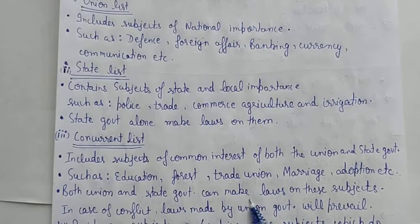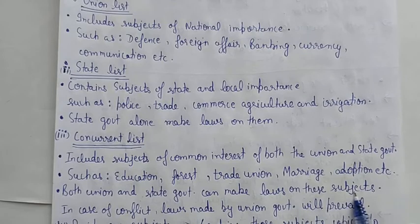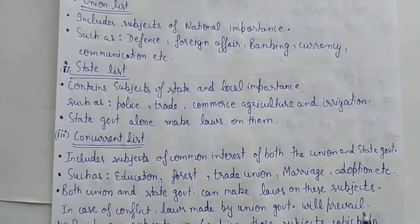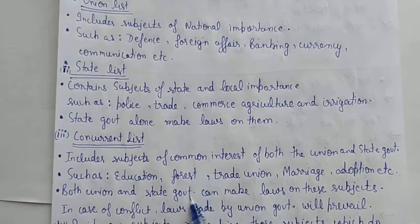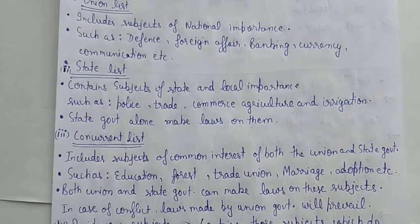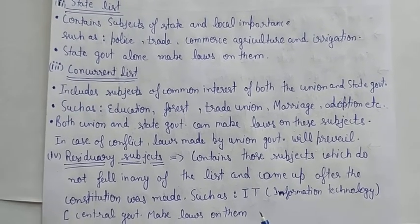Both Union and State government can make laws on these Concurrent List subjects. In case of conflict, laws made by the Union government will prevail. Agar kisi bhi mudde par state aur union government ke beech conflict hota hai, toh union government ki decision final mani jayegi.